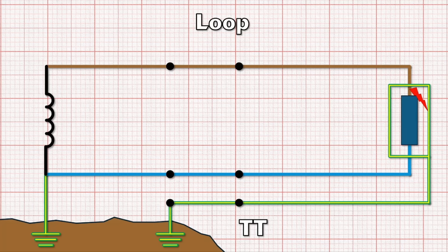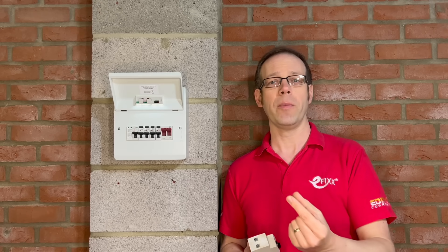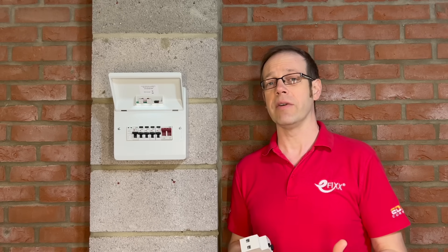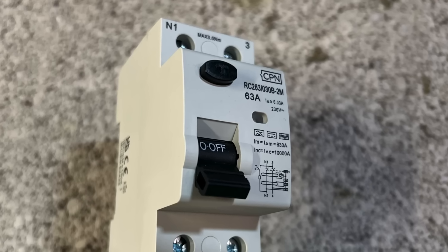Because this current is small it won't cause the overcurrent device to operate, and so the solution is to use a device that is sensitive to small currents flowing where they shouldn't. Or as we call it, an RCD.